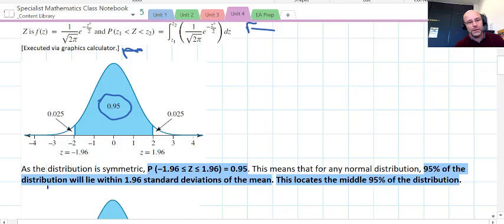or around about two standard deviations from the mean which is 0. And we've also looked at the symmetrical nature of the distribution. This means that for any normal distribution, 95% of it will lie between those Z scores 1.96 standard deviations away from the mean.